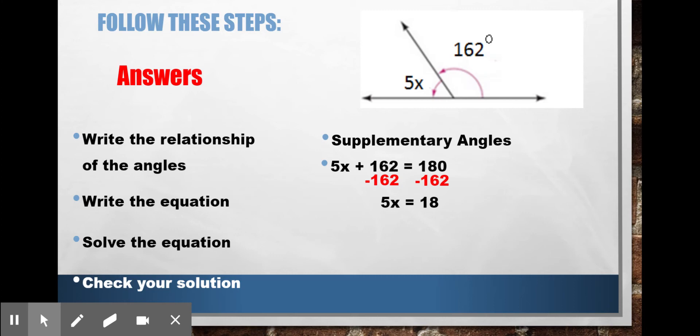Then to solve this, I have 5 times something equals 18. The opposite of multiply is divide, so I divide both sides by 5. And I get x equals 3.6.